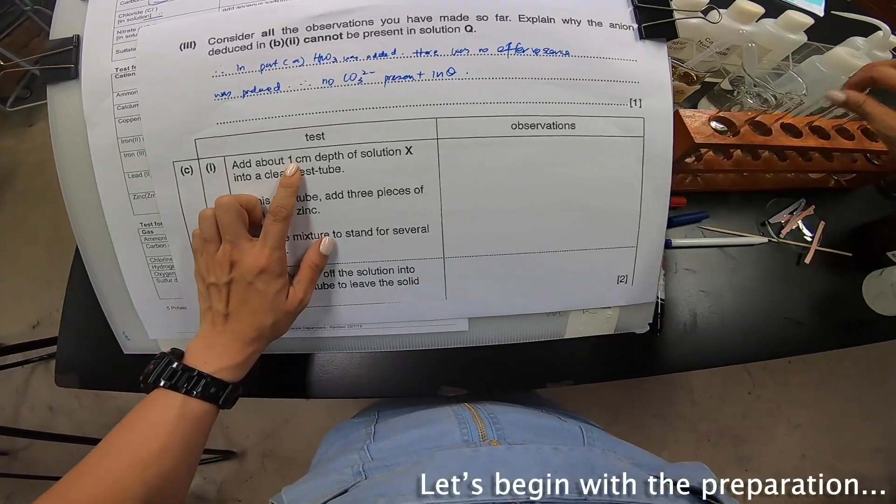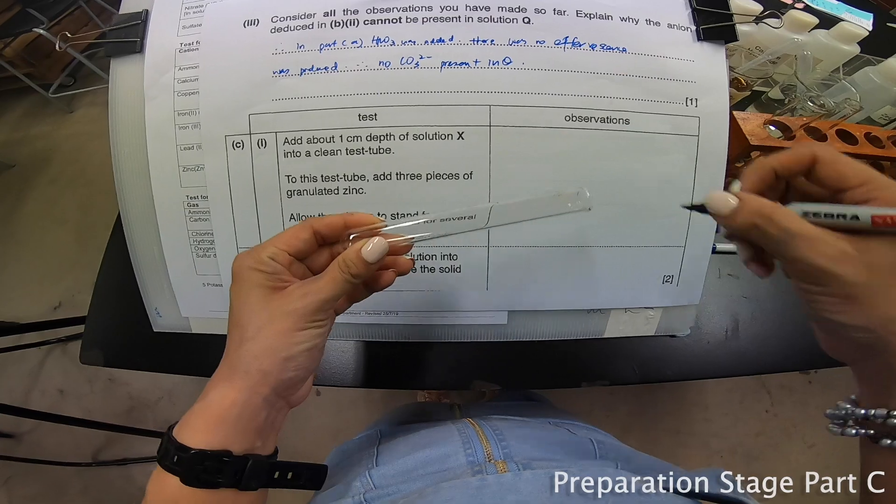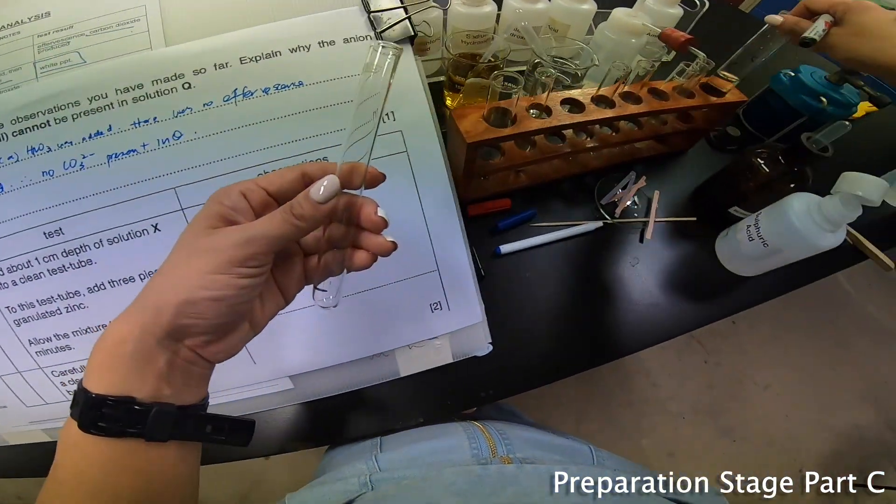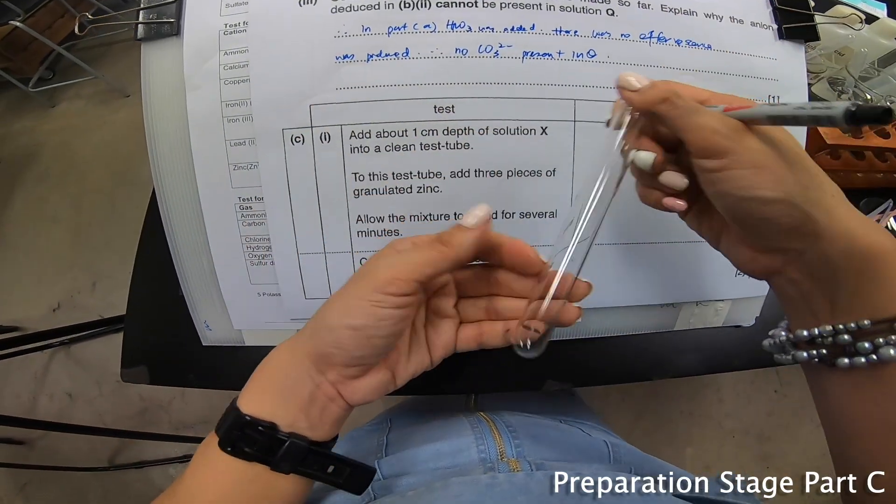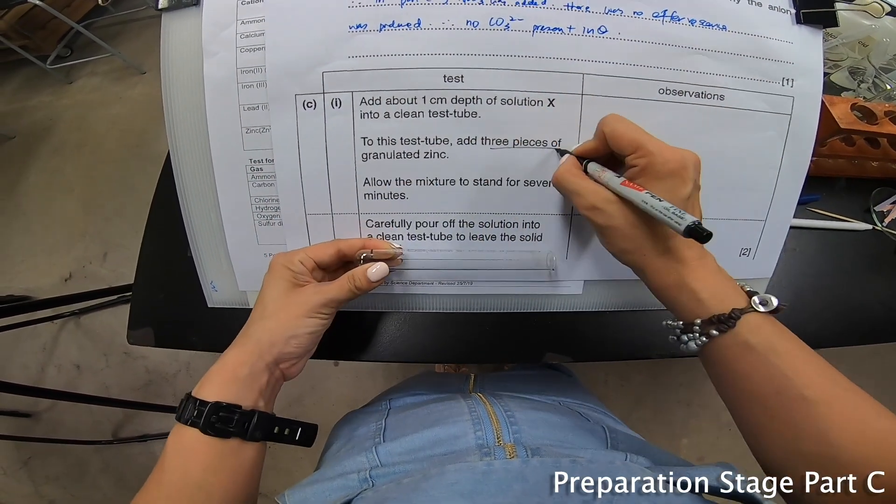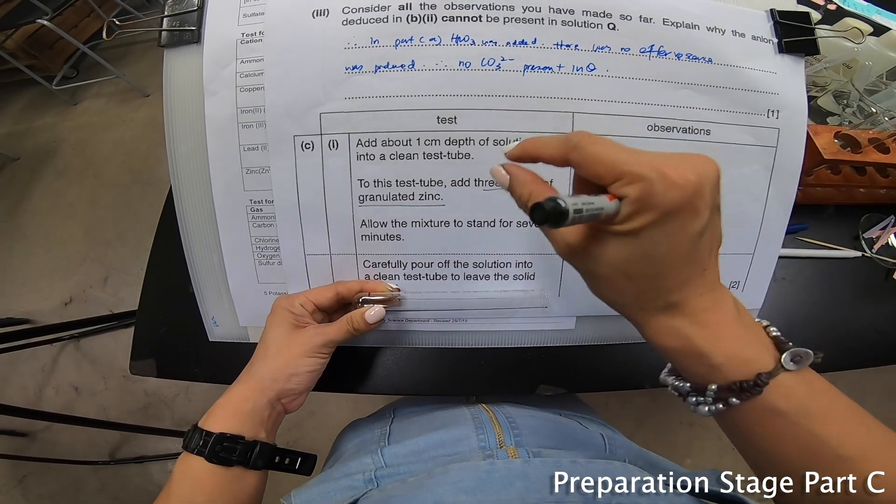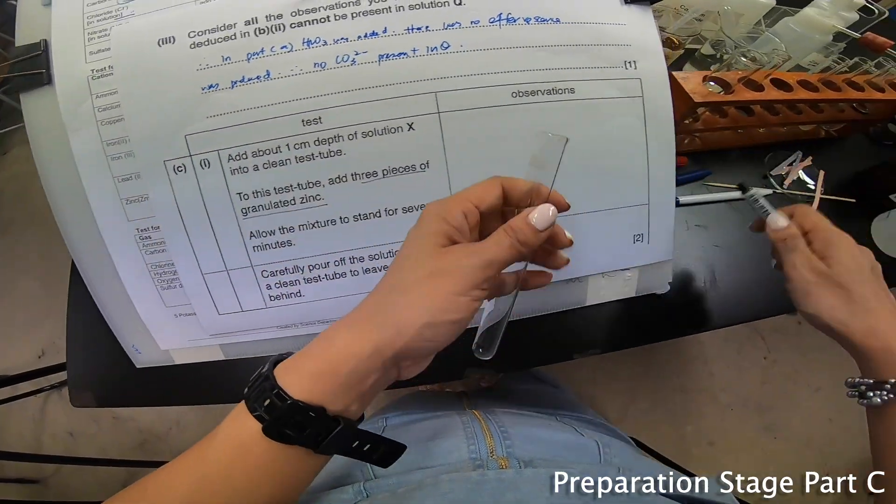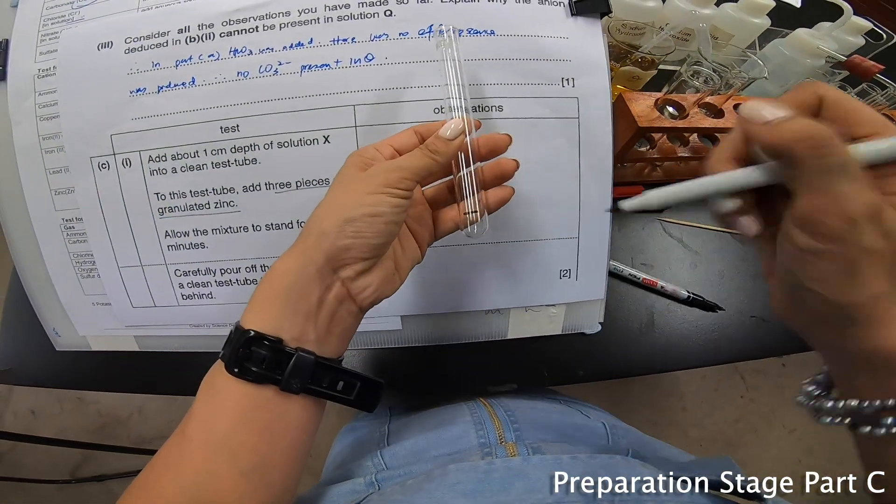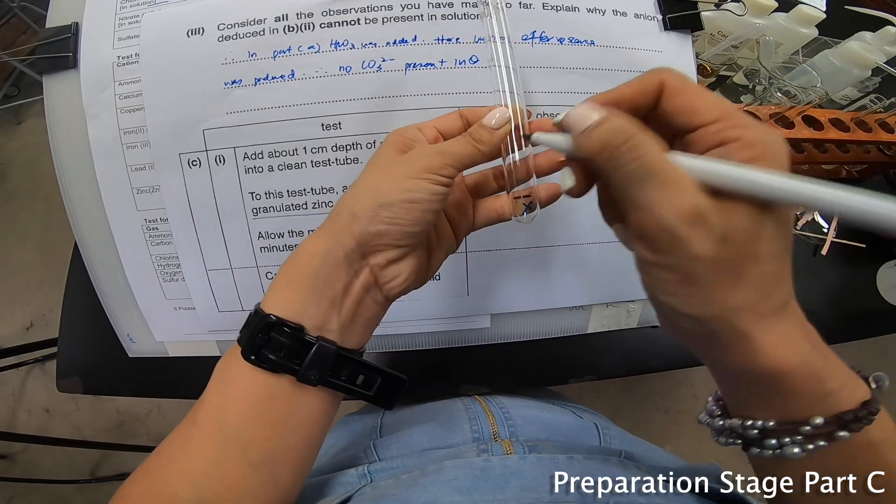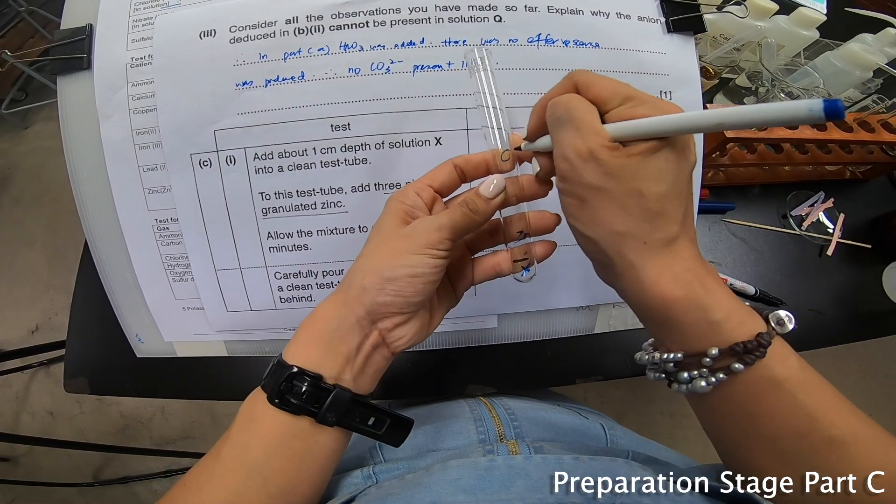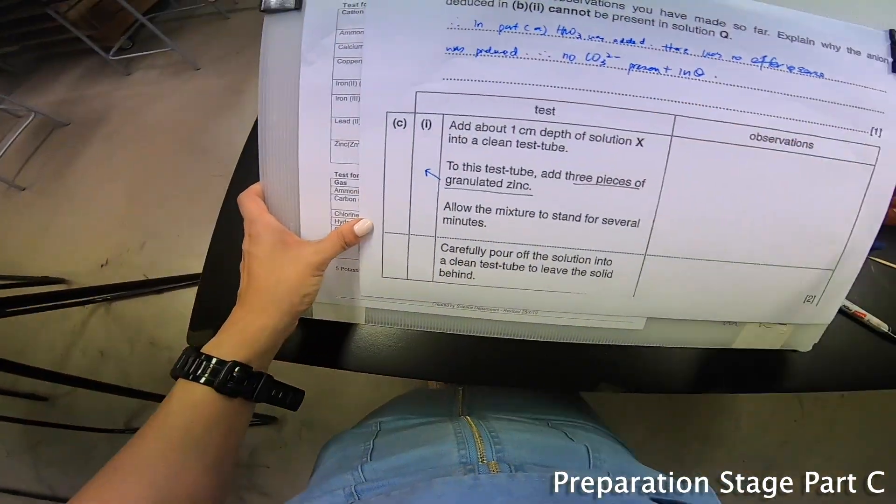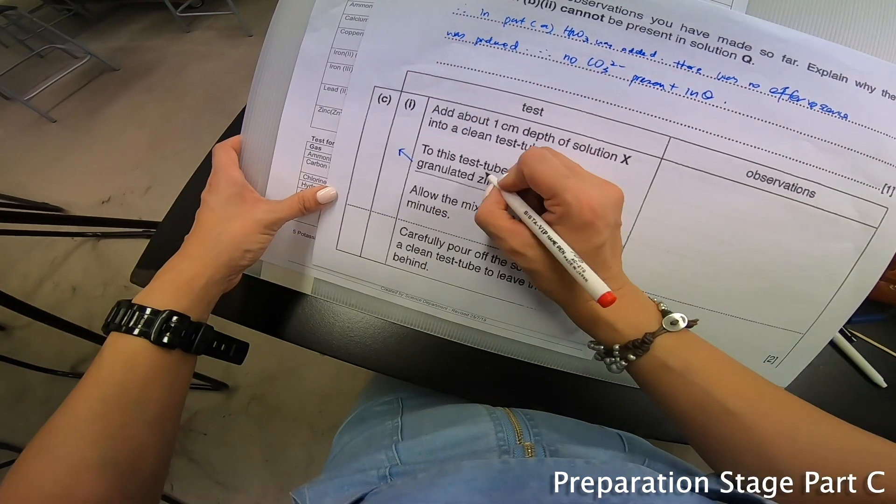Moving on to C part 1, let's do the preparation. This is the clean test tube. Add about one cm³ of X into a clean test tube, then add about three pieces of granulated zinc. Allow the mixture to stand for several minutes. Let me label it properly - this is my X, and zinc was added. Let's label C part one.